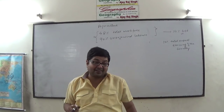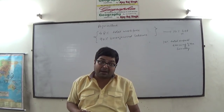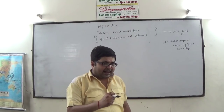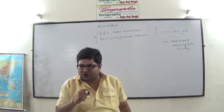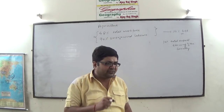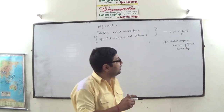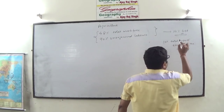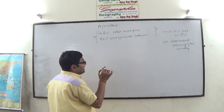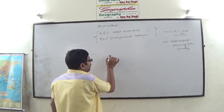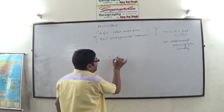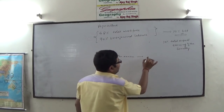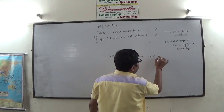Despite this fact, agriculture is the backbone of the Indian economy. In India, 75% of the manufactured commodities are domestically consumed. It is not the direct contribution of agriculture to GDP that is more important. Rather, when agriculture grows by 4% per annum, then only the Indian economy can grow at a sustained rate of 10% per annum.